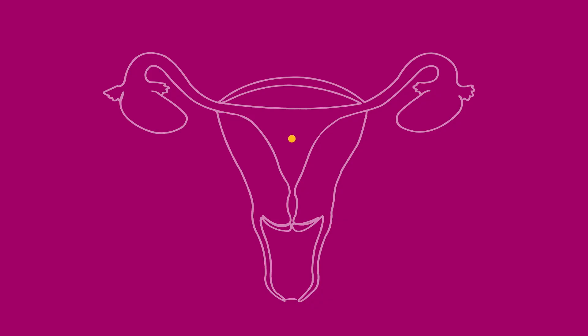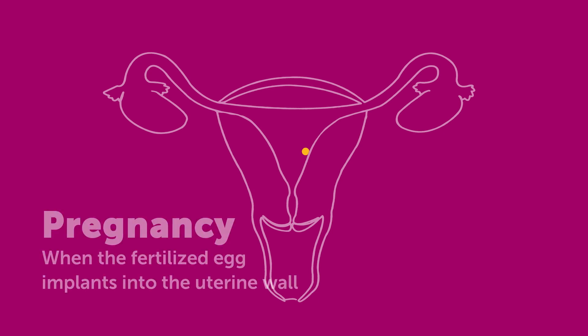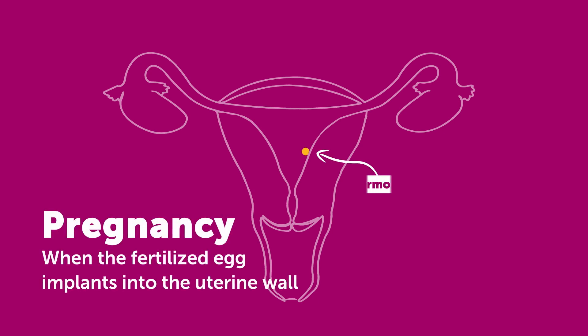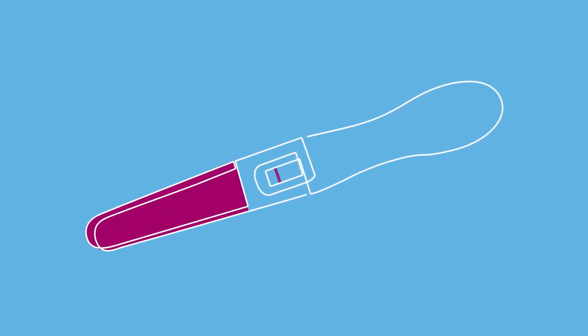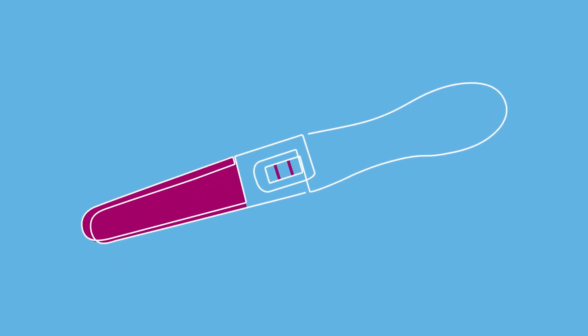The second possibility is that the fertilized egg implants in the uterine lining and pregnancy begins. Medically, this is called implantation. When a fertilized egg implants, the body begins to create pregnancy hormones to support the uterine lining. This is the hormone that is detected in a pregnancy test.